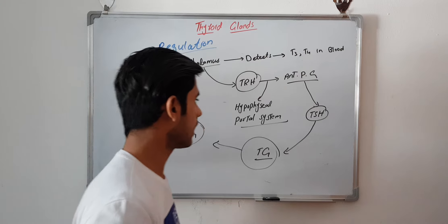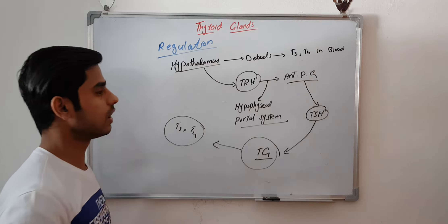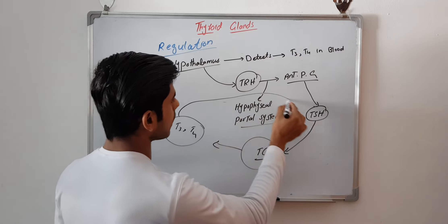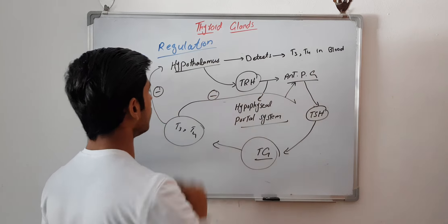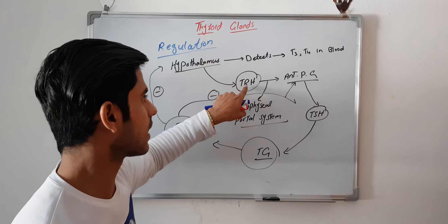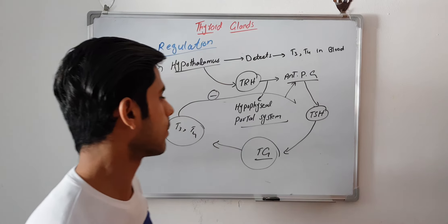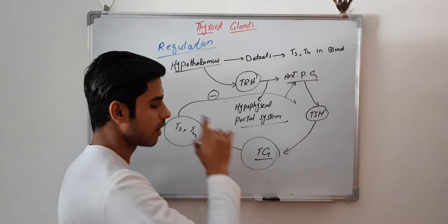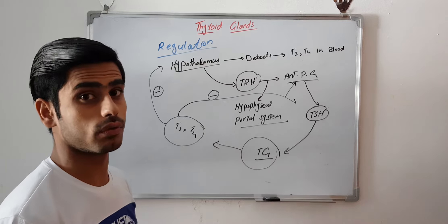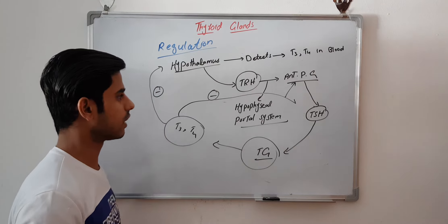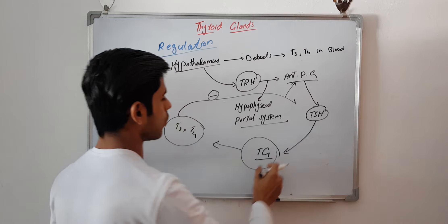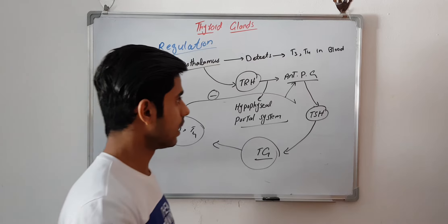When T3 and T4 increase, they give negative feedback to the hypothalamus and to the anterior pituitary gland. When the hypothalamus detects a high level of T3 and T4, it will not release the thyroid releasing hormone, so there is no stimulation to the anterior pituitary gland, no release of thyroid stimulating hormone, no stimulation of the thyroid gland, and no further production of T3 and T4 hormones. It also gives negative feedback to the anterior pituitary gland.